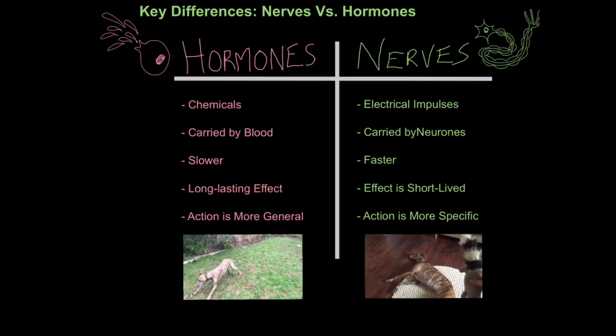So this is my dog responding to a toy. That is a reflex response. And you can see it was fairly rapid and very short-lived. It was a very specific action. It only really affected her neck muscles there. And obviously her eyes as well, the muscles that control her eyes. So that highlights the key points for nervous communication.